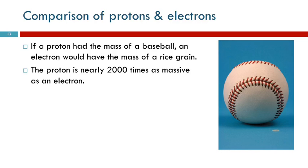Comparing the size of protons and electrons: if the proton had the mass of a baseball, an electron would be about the mass of a rice grain. So electrons compared to protons and to neutrons are very small. The proton is nearly 2,000 times larger in mass.